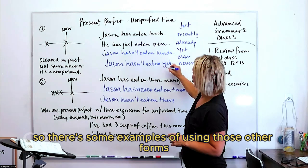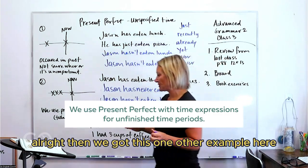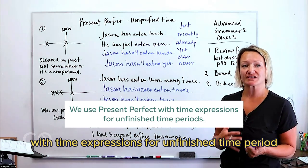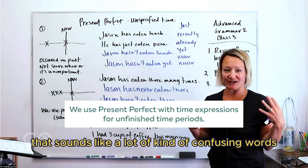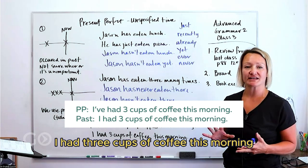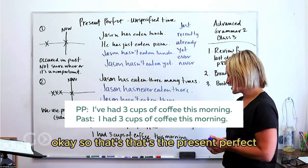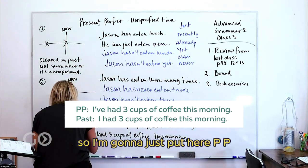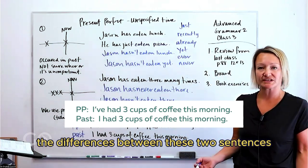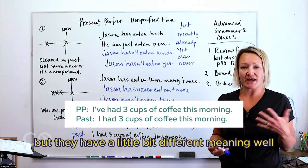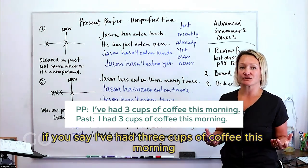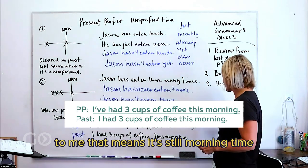There are some examples of using those forms. Now we've got one other example: we use the present perfect with time expressions for unfinished time periods. That sounds like confusing words, but the examples will make it clear. First example: 'I've had three cups of coffee this morning' — that's present perfect. Compare that to 'I had three cups of coffee this morning' — that's simple past. They're similar but have very different meanings.